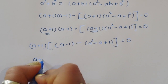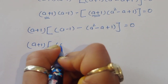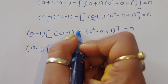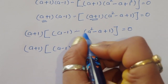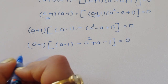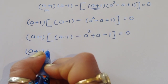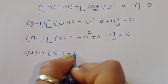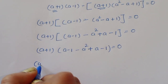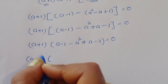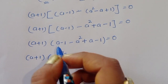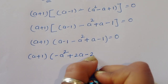We can see (a + 1) appears in both terms, so we take (a + 1) as common factor: (a + 1) times [(a − 1) minus (a squared minus a plus 1)] is equal to 0. Opening the bracket: a + 1 times (a minus 1 minus a squared plus a minus 1) is equal to 0.